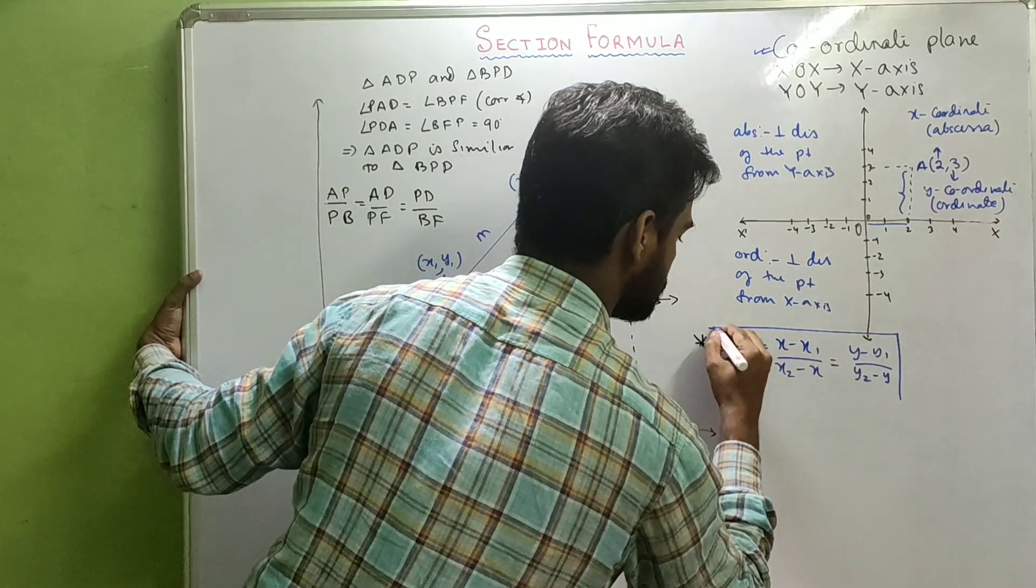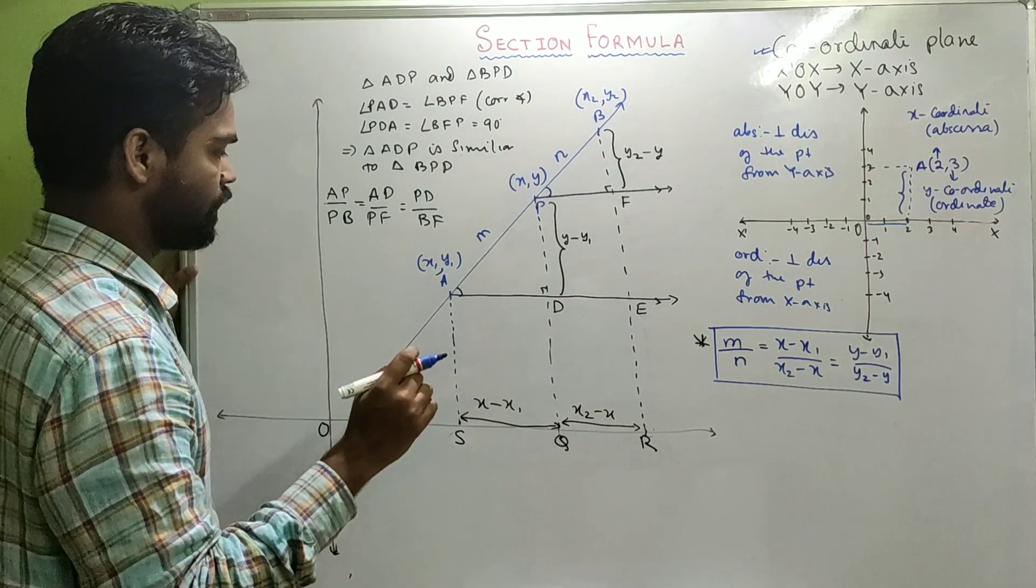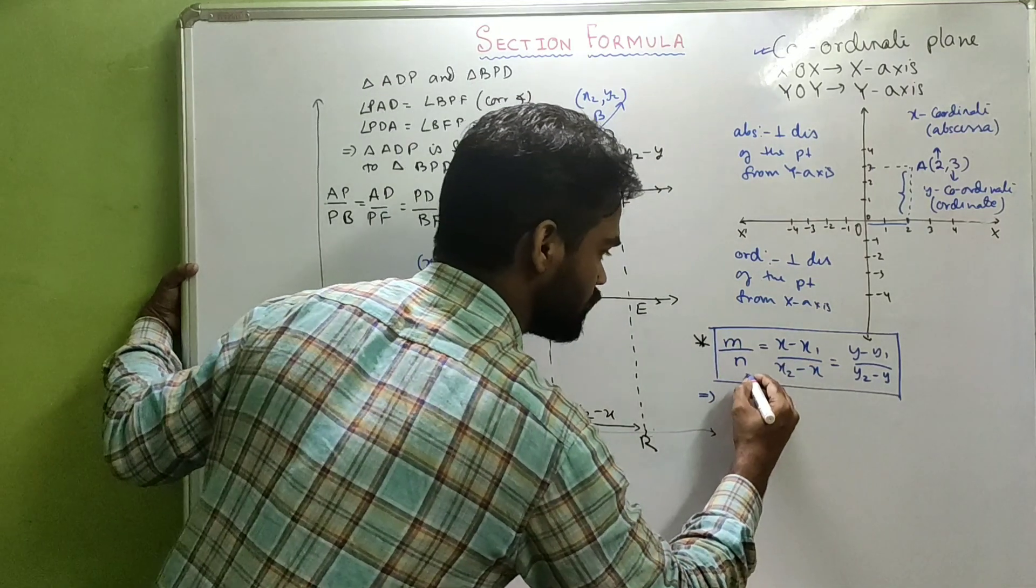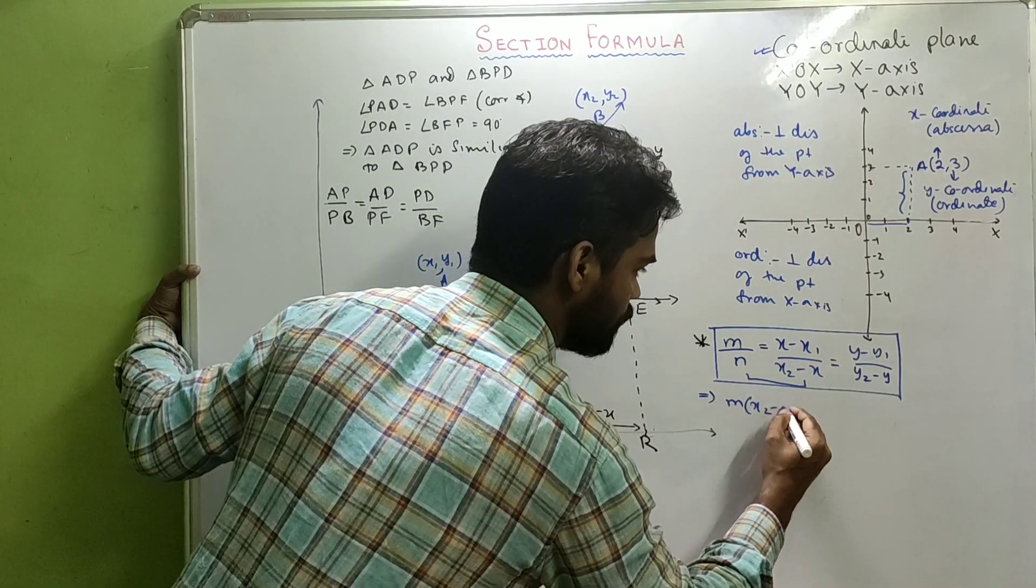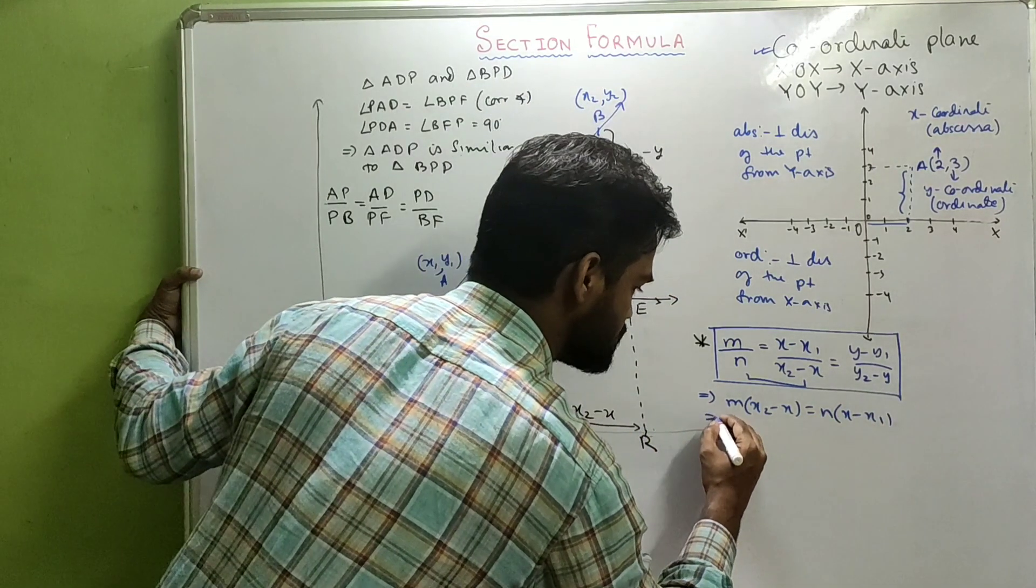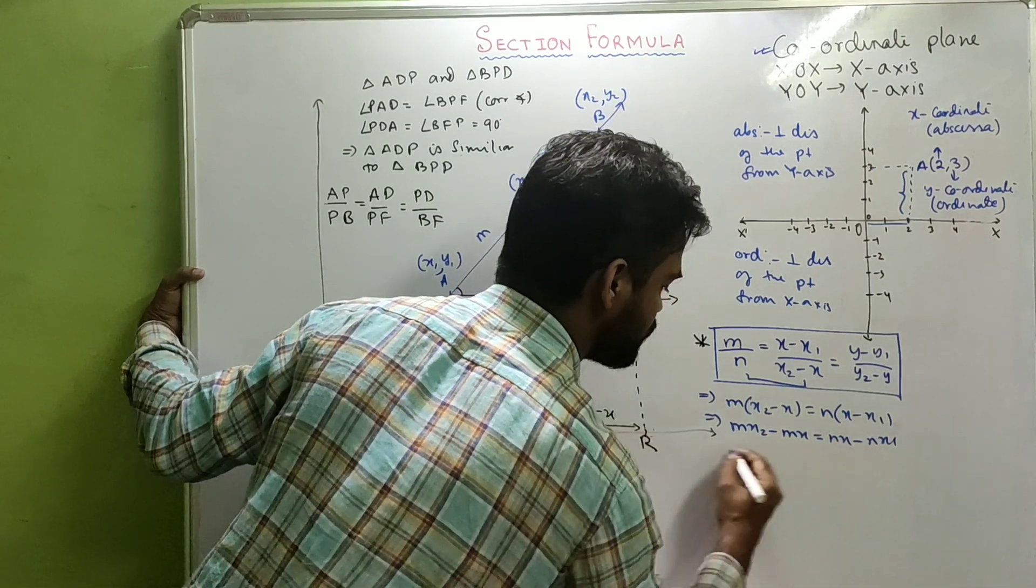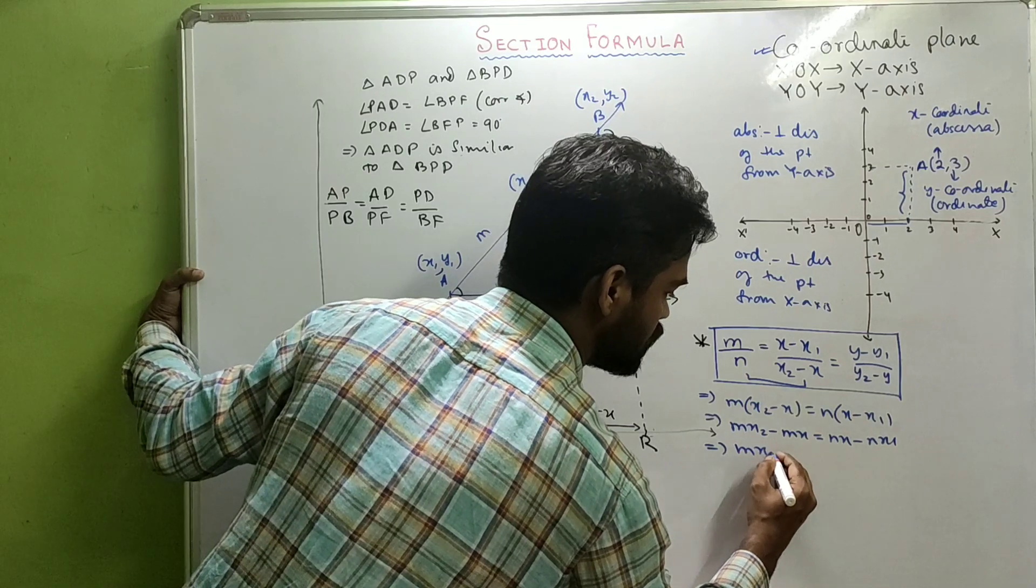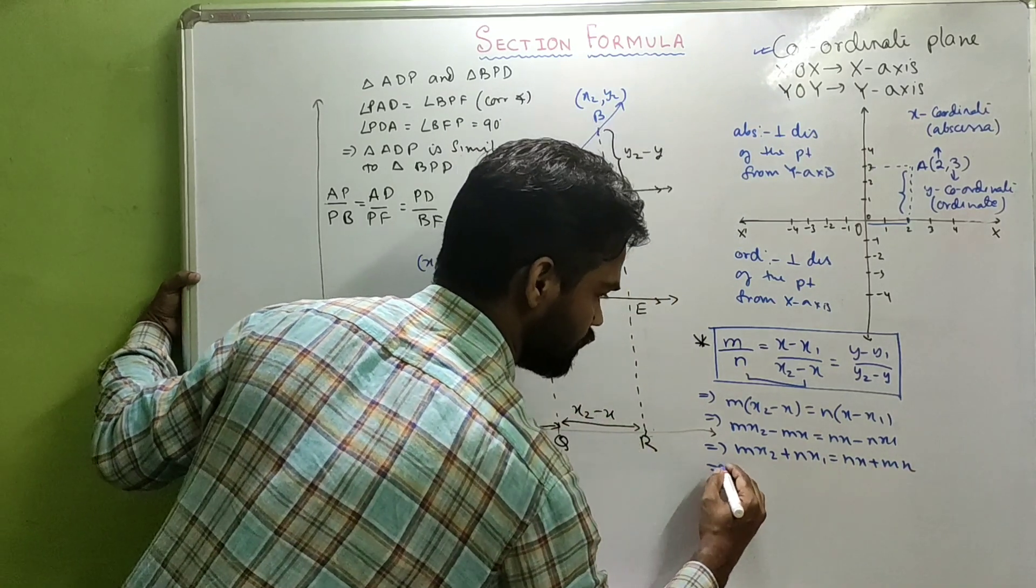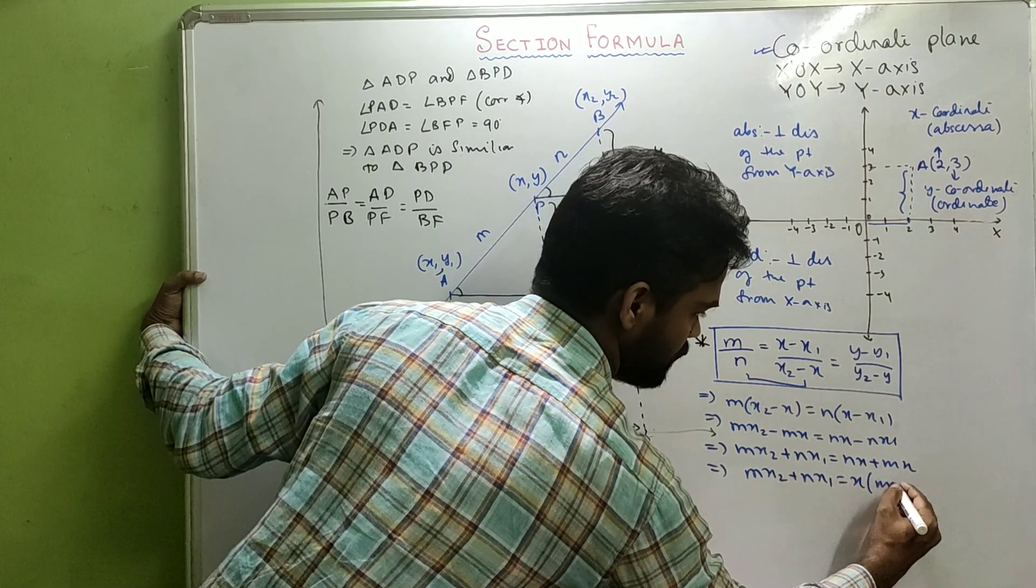Have we got a relation? Now, solve these two first and try to make X the subject. When I cross multiply, M(X2 minus X) equals N(X minus X1). Which means MX2 minus MX equals NX minus NX1. Which means MX2 plus NX1 equals NX plus MX.